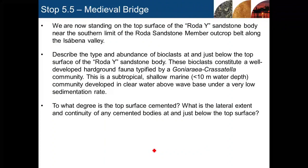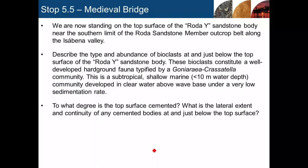Here we're standing on the bedding plane — the top surface of the Rhodowise sandstone — and we can look down at our feet and see what that top surface looks like. If you remember from stop 5.3, looking across the cliff face and sketching the clinoforms in the Rhodowise sandstone unit, we made the observation that the upper 2 or 3 metres looked harder and more resistant. We can now think about why that is and what we're seeing on this top surface.